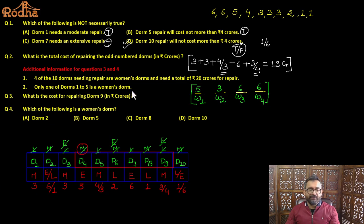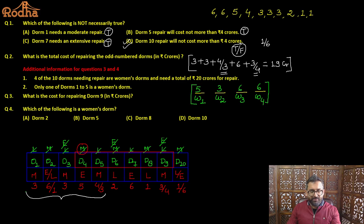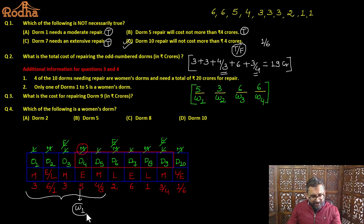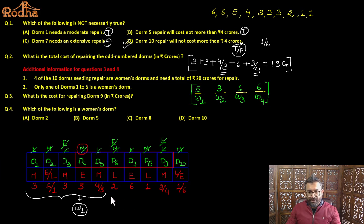Only one DOM from DOM 1 to DOM 5 is a women's DOM. The DOM with a 5 crore repair cost must be DOM 4 — it's the only DOM in that range with a 5 crore cost. So DOM 4 is women's DOM number one.